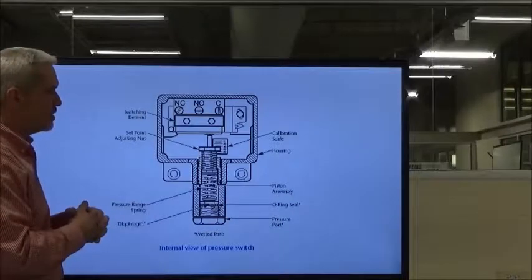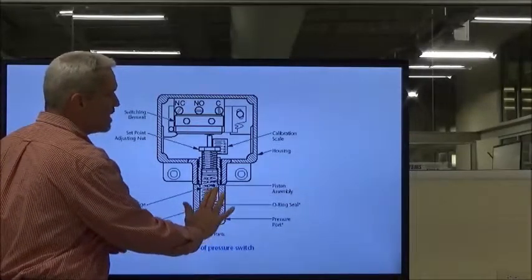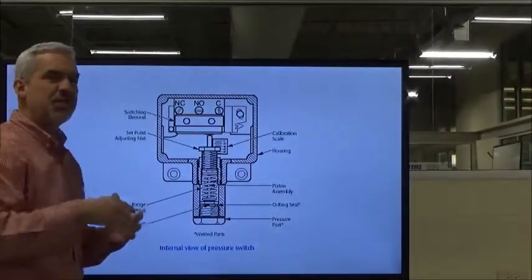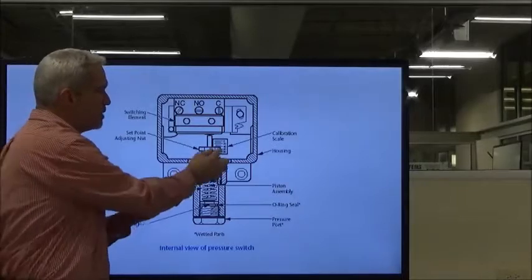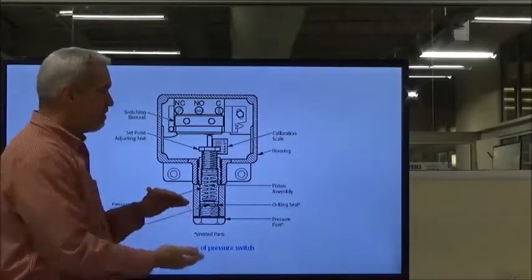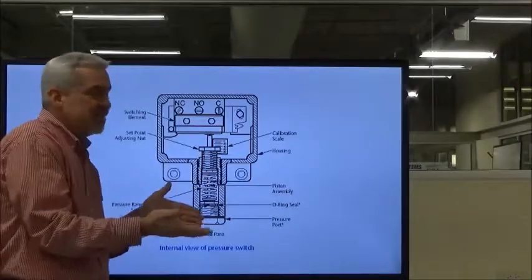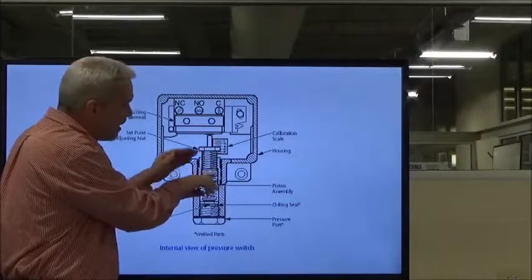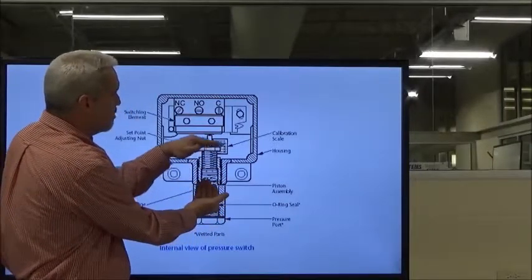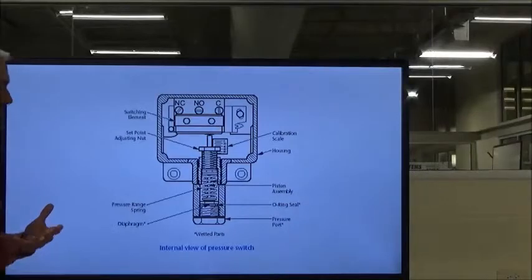The way this works is when we tighten this adjustment down here, we're applying more and more spring pressure. The more spring pressure that we have, the more fluid pressure it's going to take to actuate that piston and get it to make these contacts open or close. So, if we want to set our switch to, say, 50 psi, it takes 50 psi of fluid pressure to offset that spring so that the piston can raise up and the actuator can touch the switch and make it change. If we want it to actuate at 75 psi, we'll dial our knob, run it down and compress that spring.